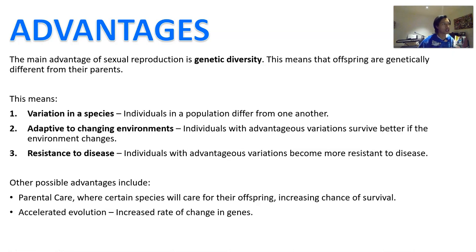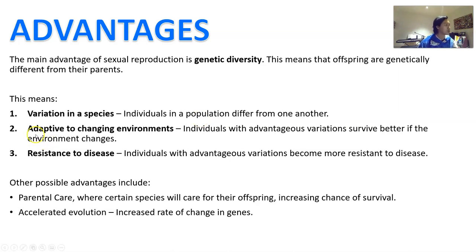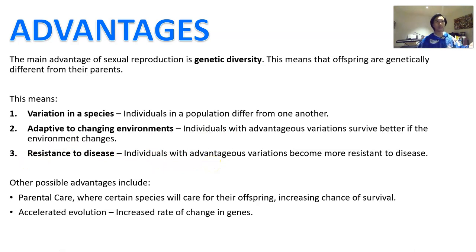The main advantage of sexual reproduction is really just genetic diversity — this means that the offspring are going to be genetically different from their parents. When you have genetic diversity, you get variation, so individuals in the population tend to differ from one another. There are always going to be a few individuals that are able to adapt to changing environments because individuals with that particular advantageous variation will survive better. It is good to have variation as a species because you can adapt to your changing environment and resist disease better — individuals with an advantageous variation can be resistant to a particular disease and repopulate despite the disease making its way through the population.